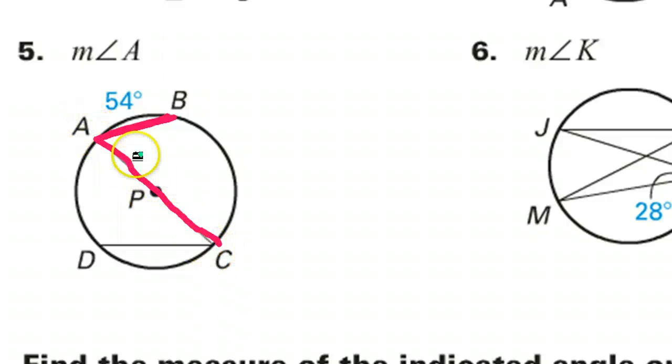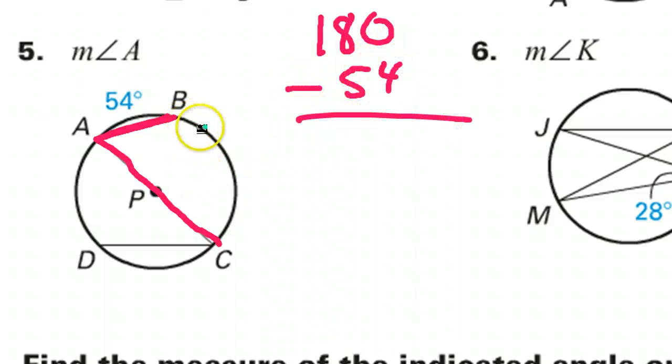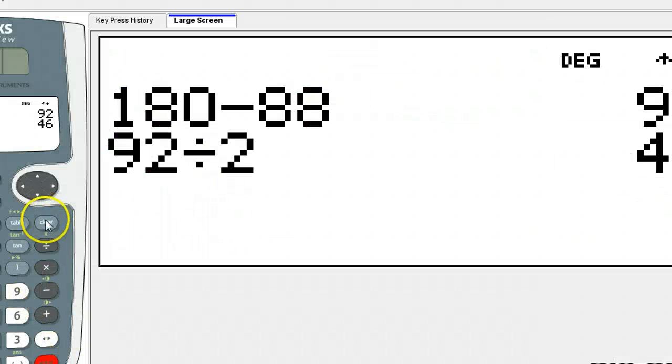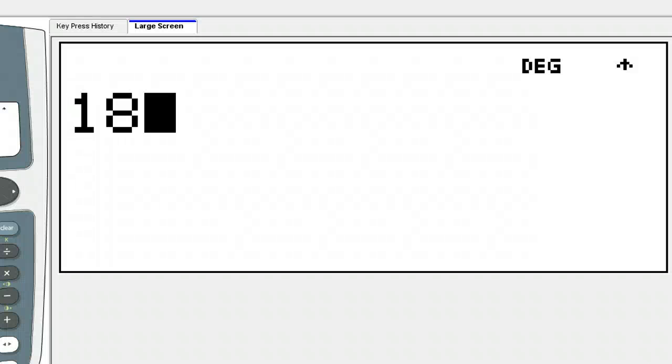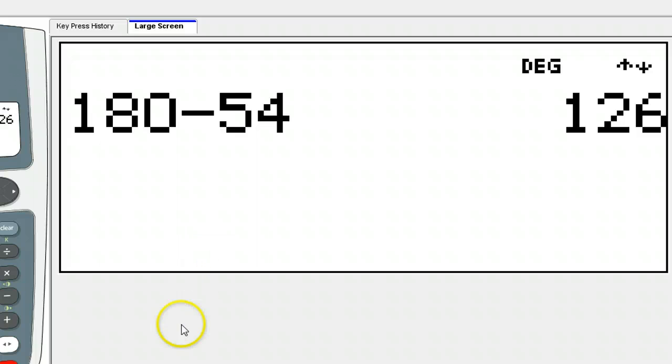Notice that this long arm here is a diameter. That means, once again, this half of the circle is 180 degrees. So I have the 54, so I should be able to figure out what this is by subtracting from 180. So 180 minus 54 should give me an arc BC. So that's 126.